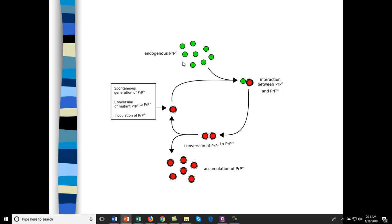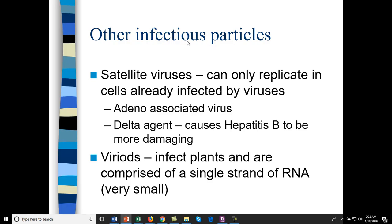Prion precursor proteins exist in normal human cells and when converted to prions they start to accumulate and cause damage. You can also have spontaneous mutation where a normal protein spontaneously mutates into a prionic form — this doesn't have to happen by infection, it can happen on its own. The non-prionic proteins carry a superscript 'c' for control, and prionic forms carry superscript 'sc' standing for scrapie, one of the first recognized prion diseases.